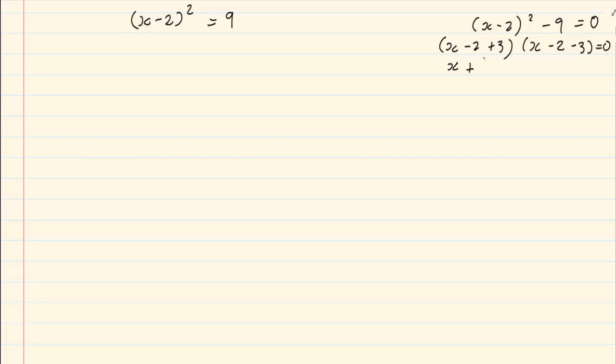Our final answer would be (x+1)(x-5). Then we solve: x+1=0, so x=-1, and x-5=0, so x=5.